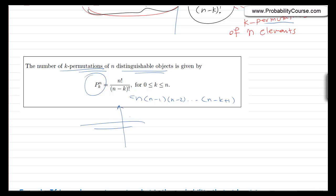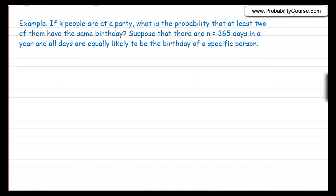It is important to understand how to solve problems rather than memorize formulas. Here's a famous example called the birthday paradox. If k people are at a party, what is the probability that at least two of them have the same birthday? The assumption is that there are n = 365 days in a year and all days are equally likely to be anyone's birthday — a very simple model. Let A be the event that at least two people have the same birthday.